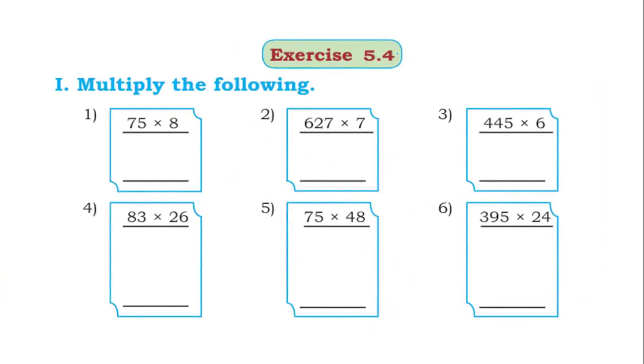Exercise 5.4. Multiply the following: 75 into 8. 8 fives are 40, put 0 in unit place, carry 4. 8 sevens are 56, 56 plus 4, 60. 600 is the answer.